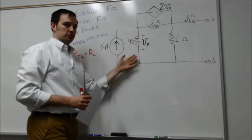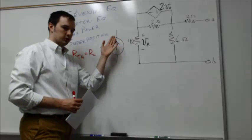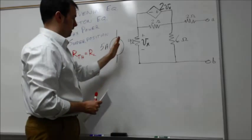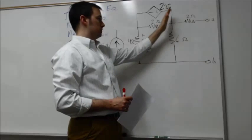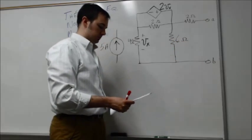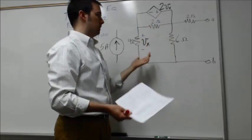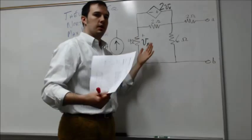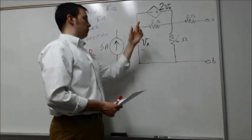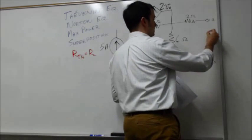For a current source we simply disconnect it — open circuit. If it were a voltage source, we would place a short circuit across it. Now we need to write equations to solve for the equivalent resistance between terminals a and b. Without the dependent voltage source it would be straightforward — just series and parallel resistor combinations — but because the dependent source is present, we use a test voltage approach.